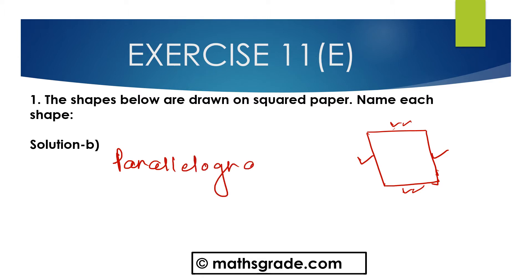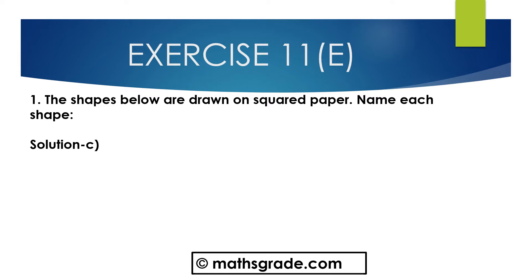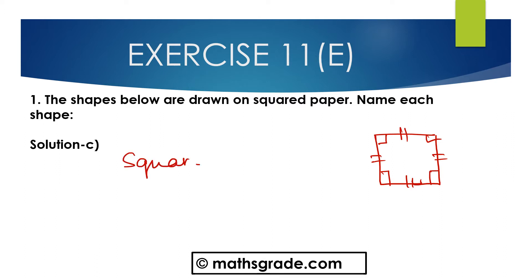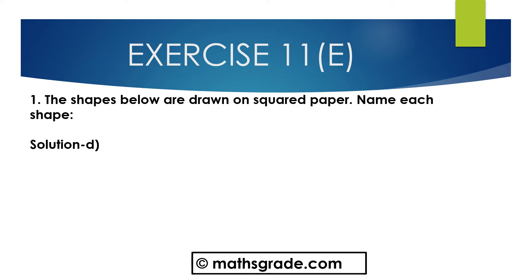Now third, part C. This shape is given. In this shape, all four sides are equal, each side is equal, and each angle is equal to 90 degrees — all four angles are equal to 90 degrees. So this is the shape of a square. Now part D: this is the shape of a trapezium.